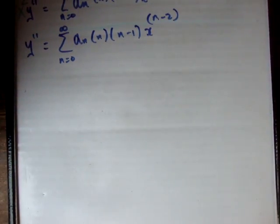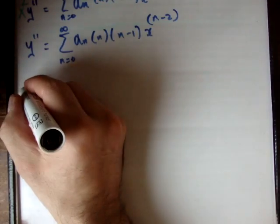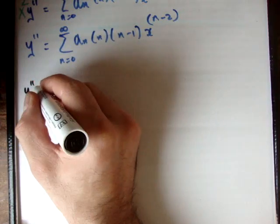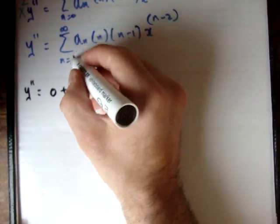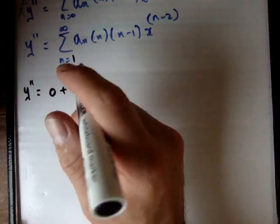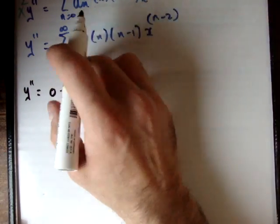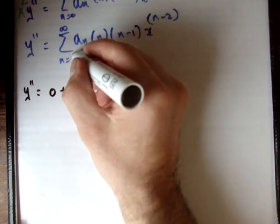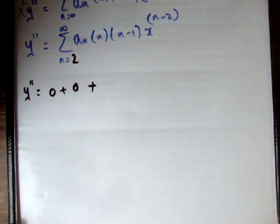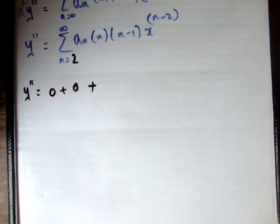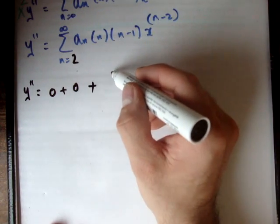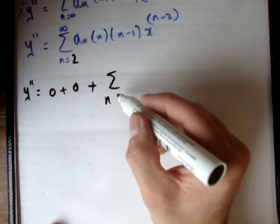The way to do this is to first of all start with the first couple of terms in the series. So y double prime equals 0 plus, then at n equals 1 we get 0 as well, then at n equals 2 we get the first nonzero term. If we shift this one upwards we'll get x to the n, and if we shift the index downwards we'll get n equals 0. So this works perfectly.